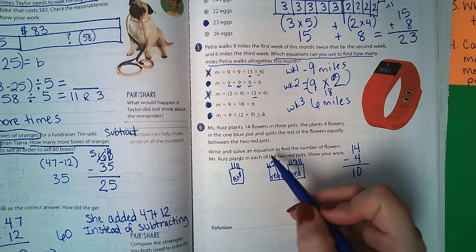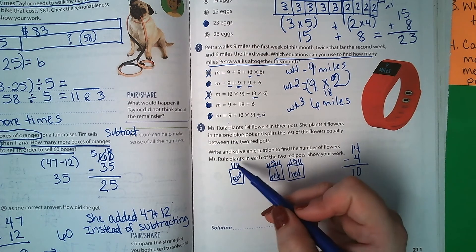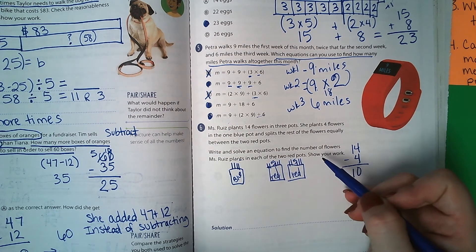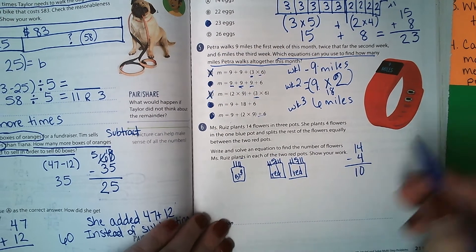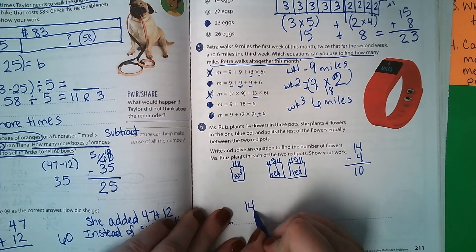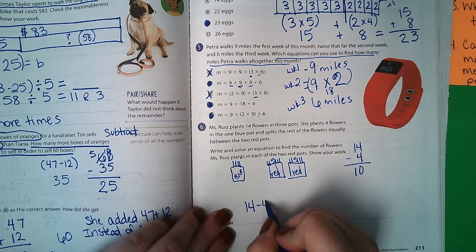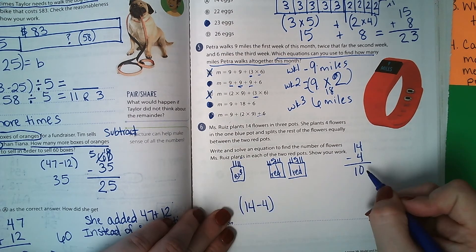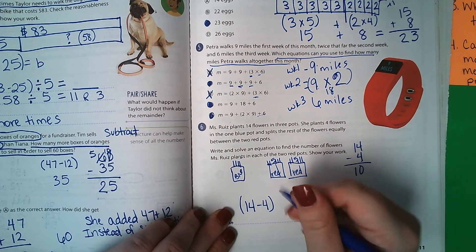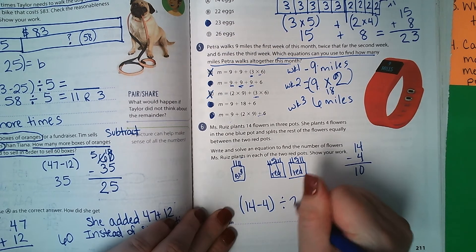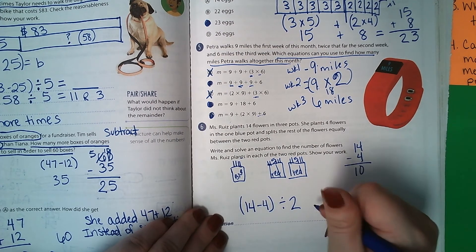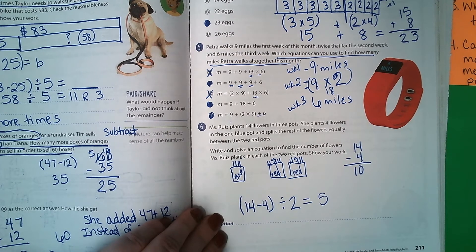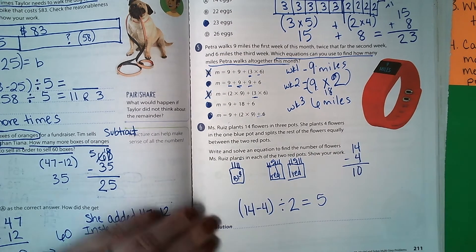Write and solve an equation to find the number of flowers Miss Ruiz plants in each of the 2 red pots. Well, let's see what we did first. First we did 14 minus 4 because she planted 4. But then when we got our answer, we have 2 here, so we divided it by 2. And then we got 5 as our answer because each pot gets 5.